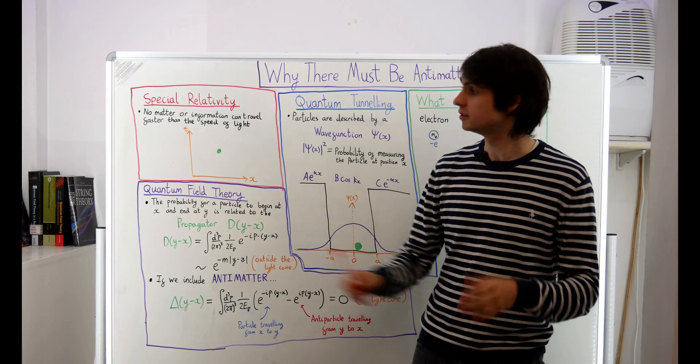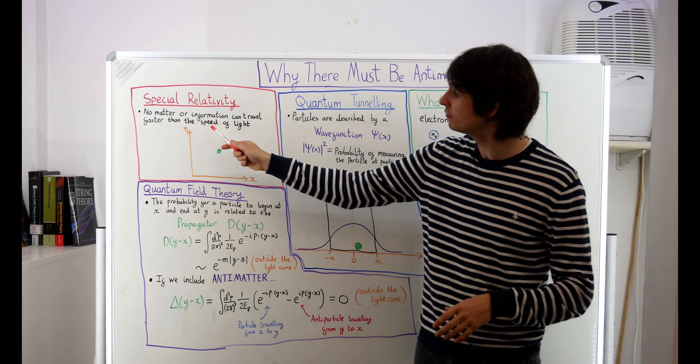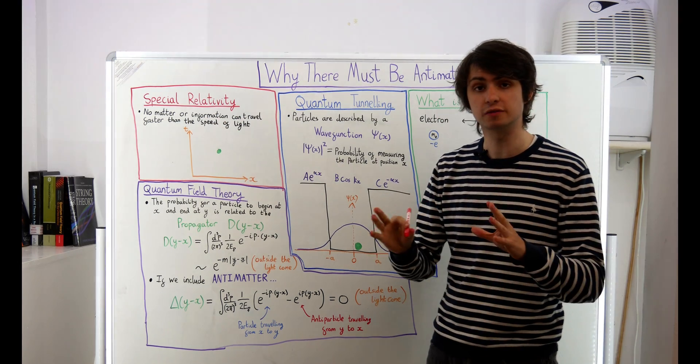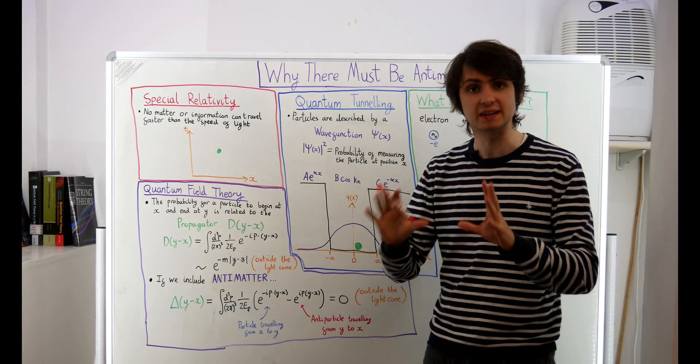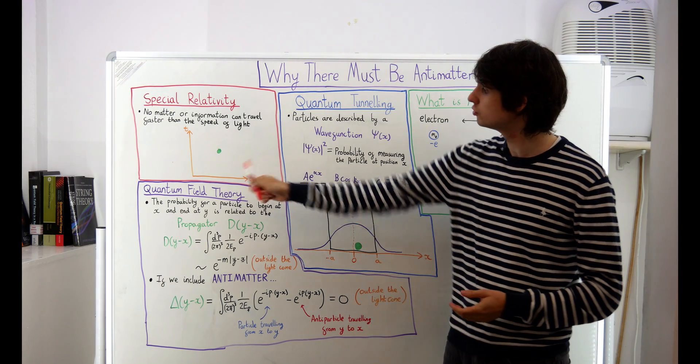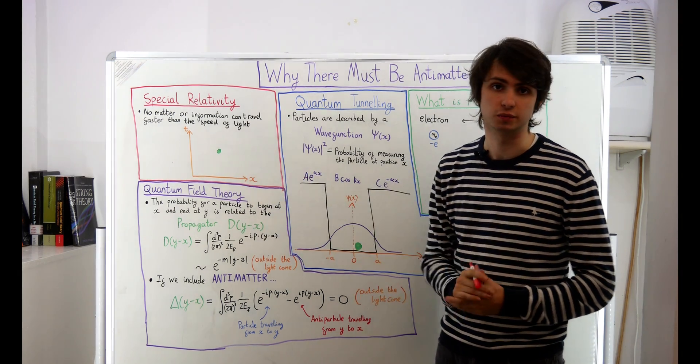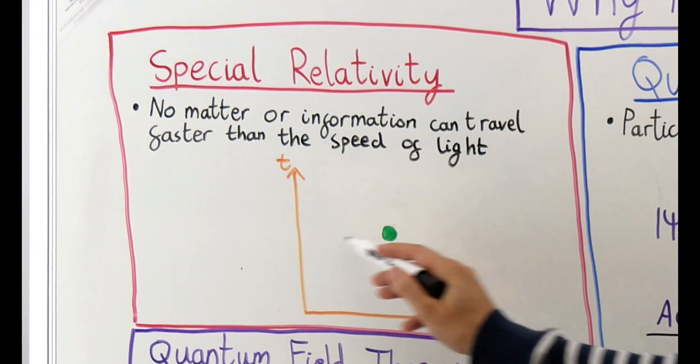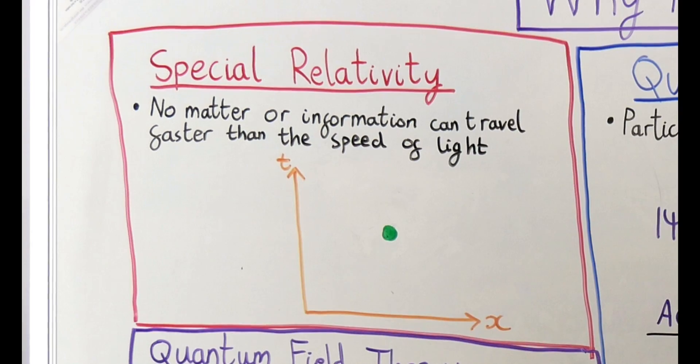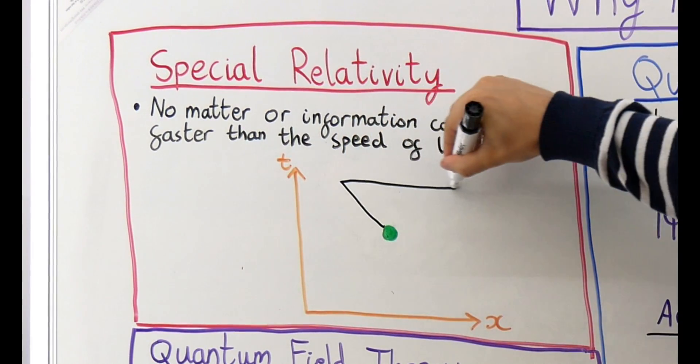You may have heard that in special relativity no matter or information can travel faster than the speed of light. The speed of light is the absolute speed limit of our universe. To represent this fact we can draw what's called a light cone. Let's say that at some time t we have a particle located at a position x. The light cone for this particle looks like this.